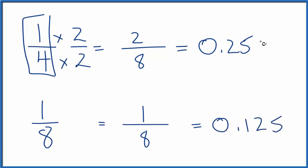So 0.25, you could think of it as 0.250. That's larger than 0.125. And 1/4? That's larger than 1/8, just like we found before.